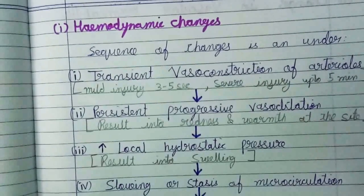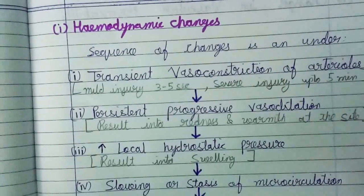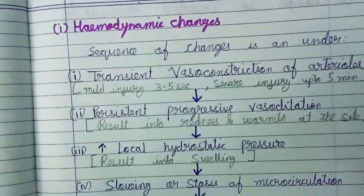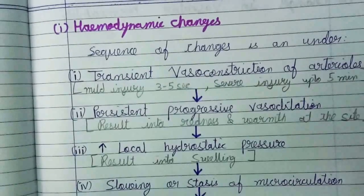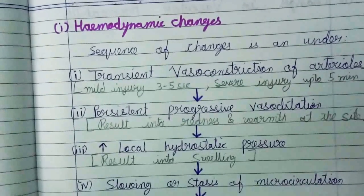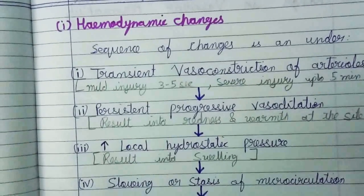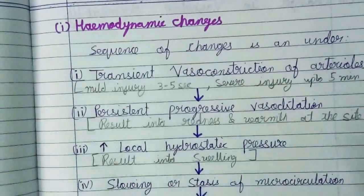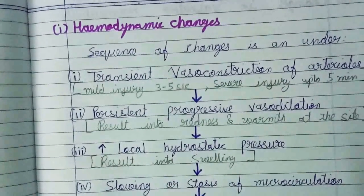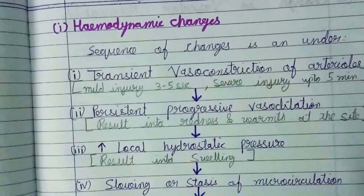The sequence of hemodynamic changes is as follows: firstly, transient vasoconstriction of the arterioles occurs when mild injury is present. This vasoconstriction lasts for three to five seconds, and in severe injury it can remain up to five minutes. Then persistent progressive vasodilation occurs at that site.